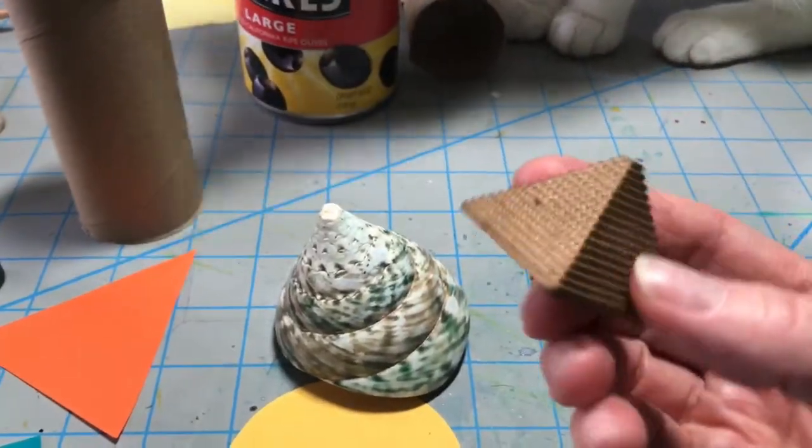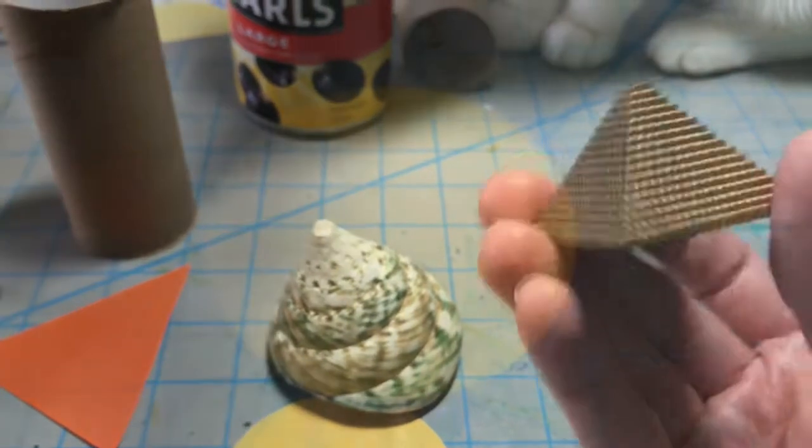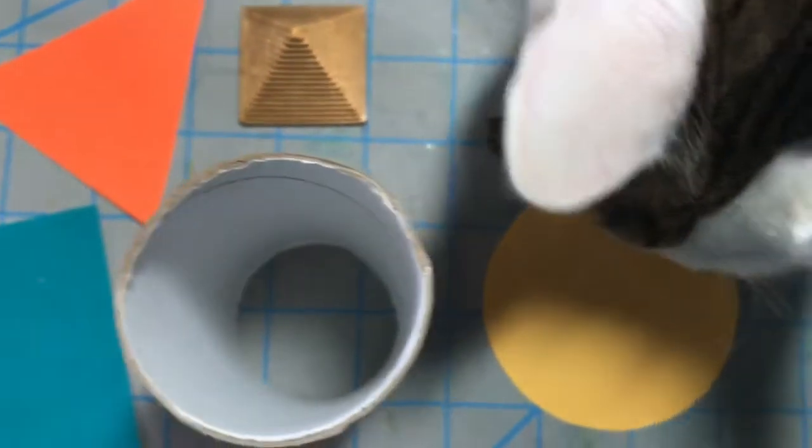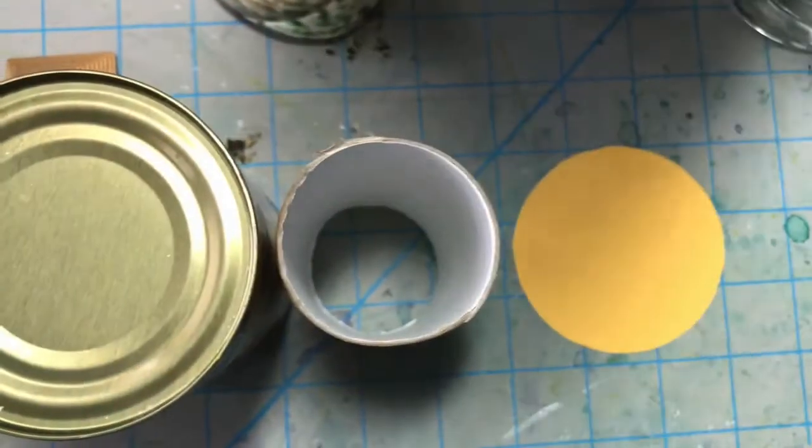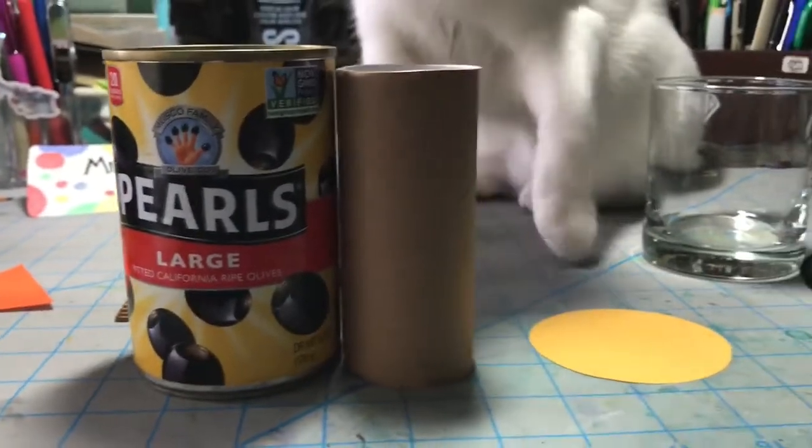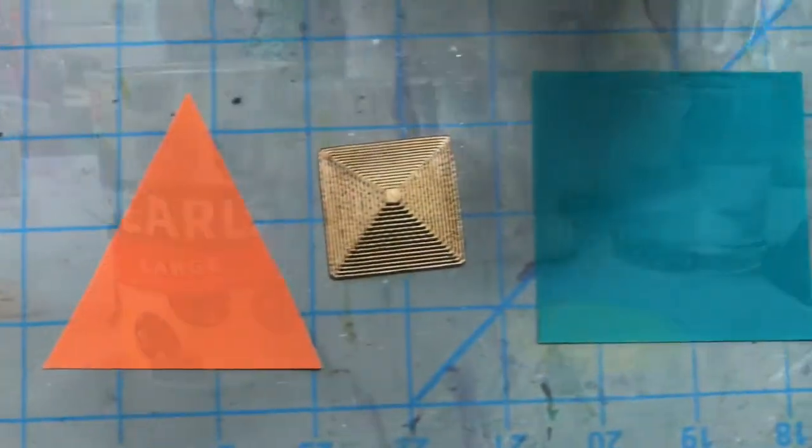This is an example of a pyramid. That's another 3D form. When you look from above, a circle and cylinders both are round, but when you look from the side, you can see they're a form.